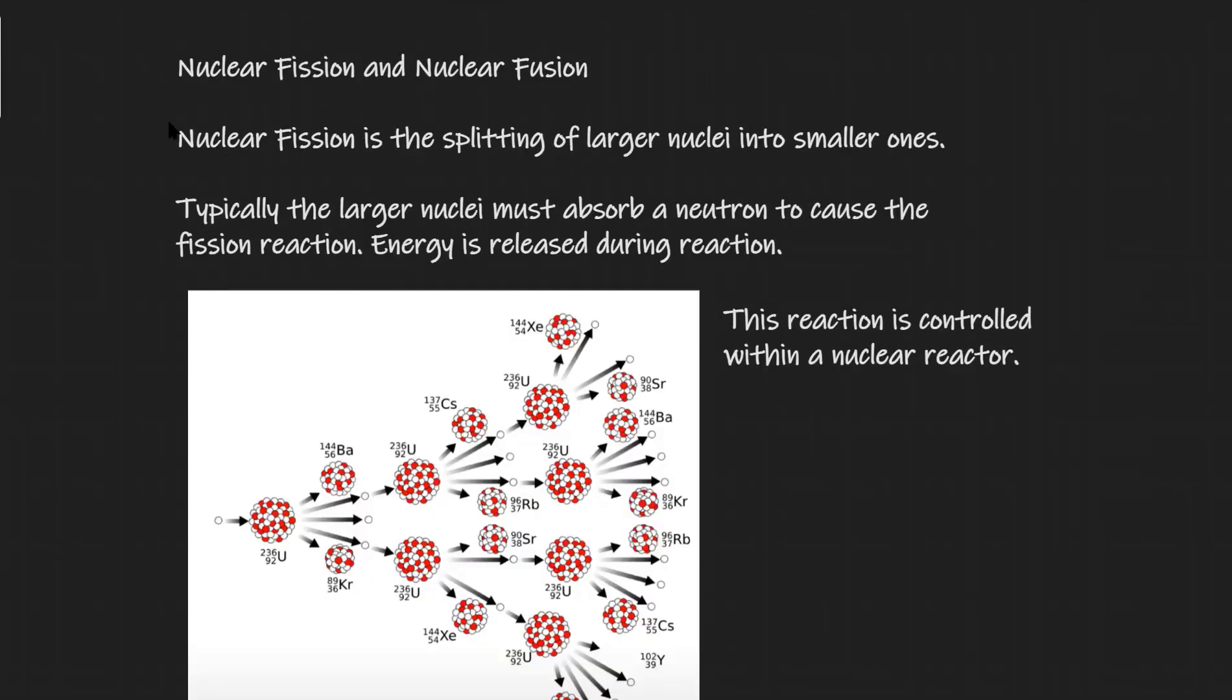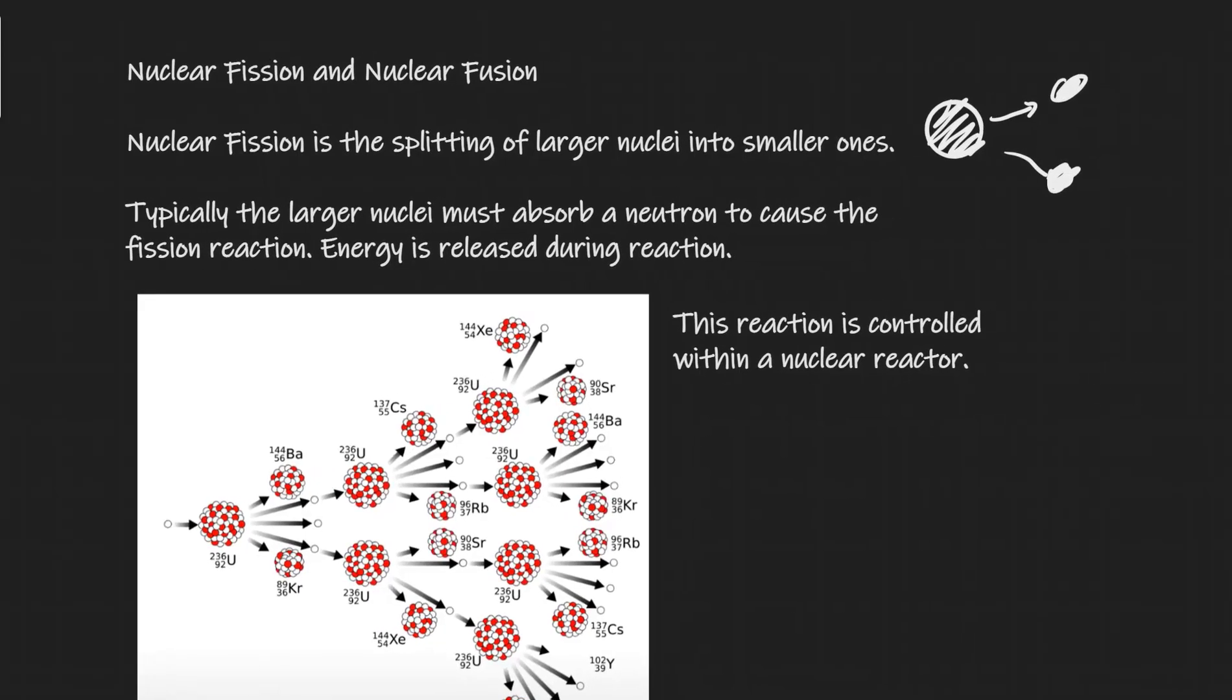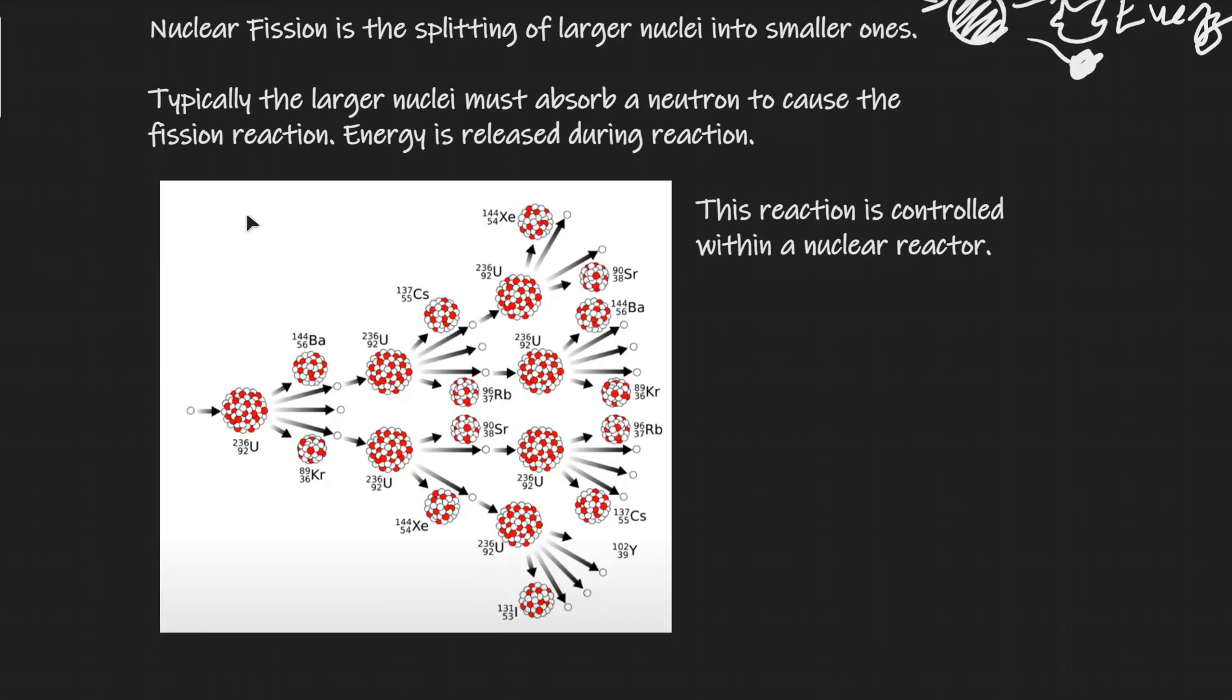Now let's talk about nuclear fission and nuclear fusion. So nuclear fission is the splitting of a larger nuclei into smaller ones. So we start with a heavy nucleus and that then splits into a couple of others which are smaller. And some energy is also released during this reaction. Now typically in order for this to happen a neutron must be absorbed. And this is illustrated over here. It's actually a process known as the chain reaction which you guys need to be able to recreate. Of course without the numbers.